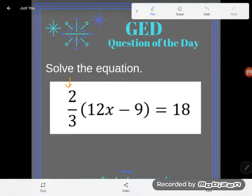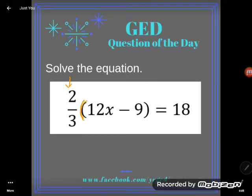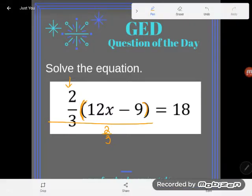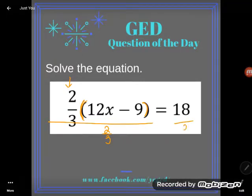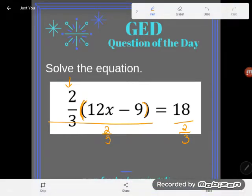Now you might ask yourself what is that two thirds doing? Well, that two thirds is multiplying with this whole group, so if I wanted to I could get rid of it by doing the opposite. I could divide the whole group by two thirds. Now a lot of you mathies are mad at me right now, that's not how I do it. That's okay, I know there's other ways. I just want to show you guys that we can always follow that principle of getting rid of things by doing the opposite.